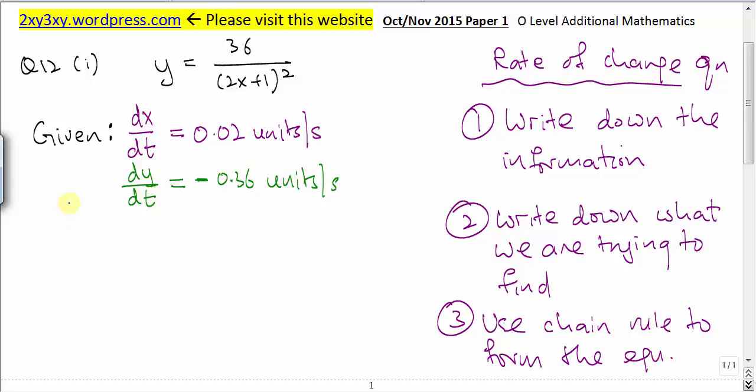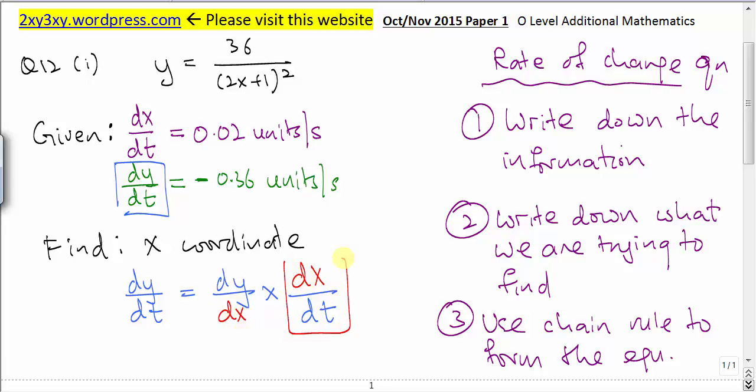We are supposed to find the x-coordinate at these instances. I'm going to use chain rule to form an equation. Since I'm given the expression for dy/dt, I would start with dy/dt equals dy/dx multiplied by dx/dt. These expressions must be the same so we can get dy/dt. Since I know dx/dt, I put dx here and dx here as well.